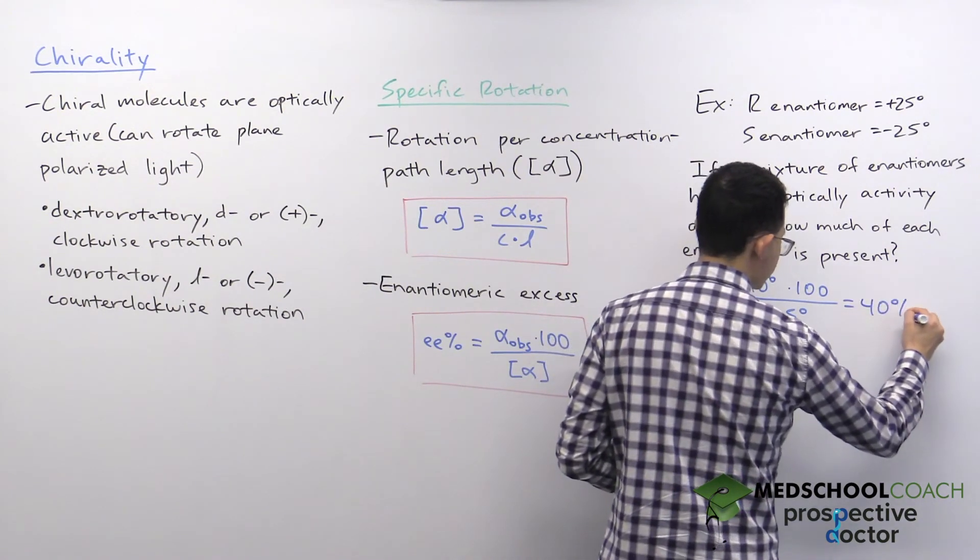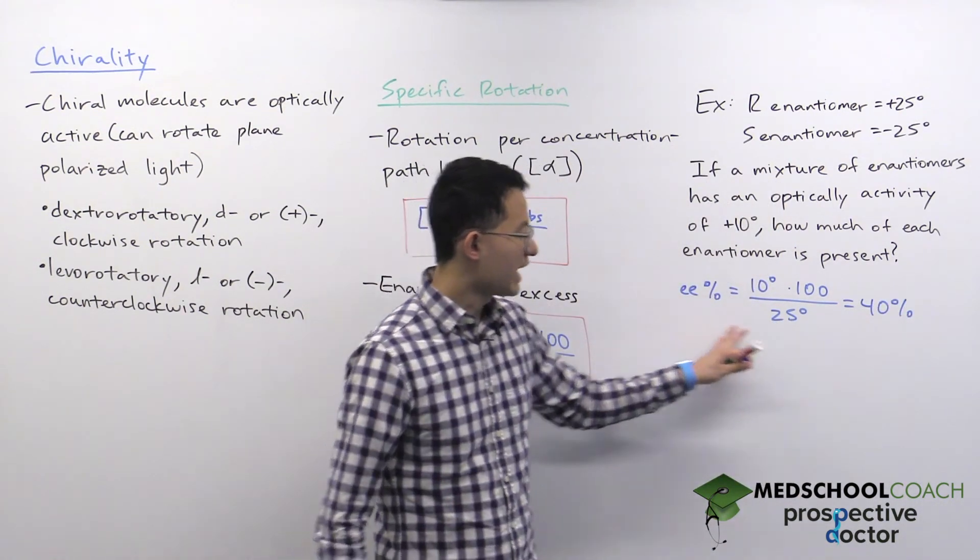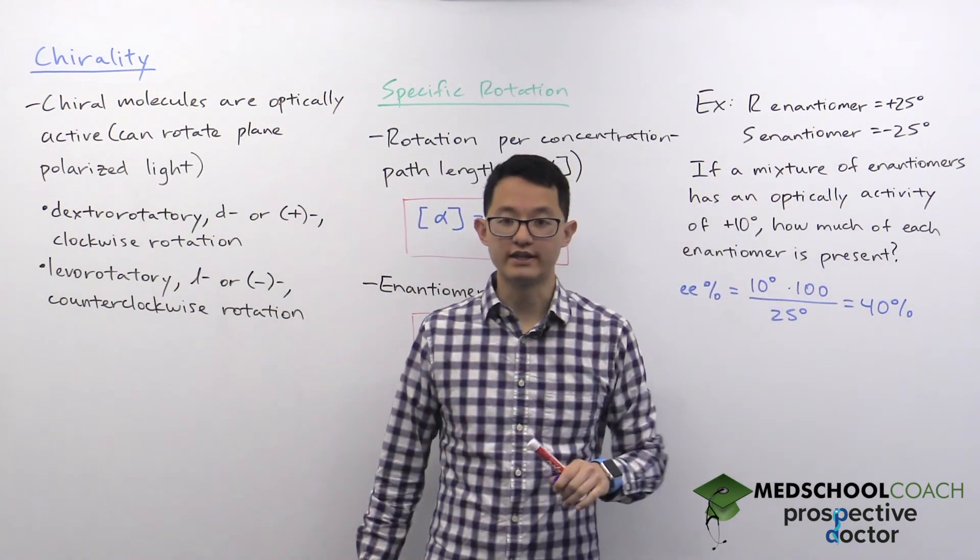So the positive 25 degrees, and when you do this calculation, you're going to end up with a value of 40 percent.